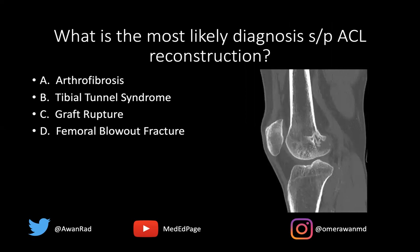Is this arthrofibrosis, tibial tunnel syndrome, graft rupture, or femoral blowout fracture? Arthrofibrosis is typically a focal form of fibrosis that occurs anterior to the graft, right in this region. It's usually an MRI diagnosis — typically dark on T1, dark on T2 — and it limits terminal extension of the knee post-ACL reconstruction. It's very hard to see on a CT exam.